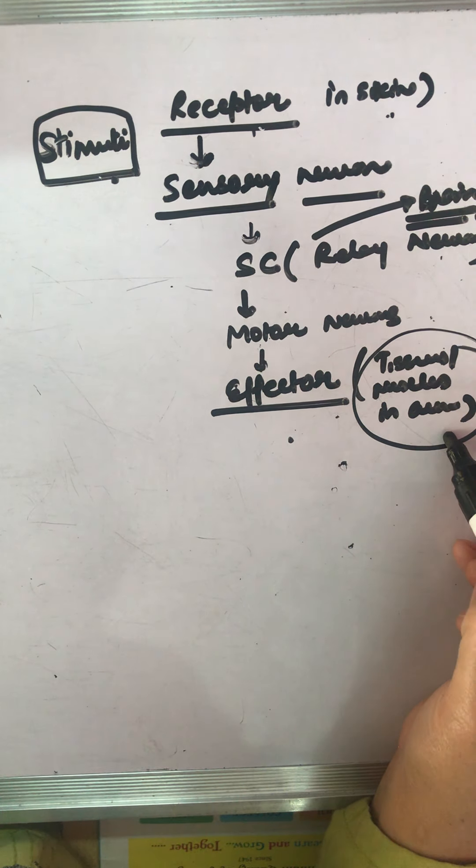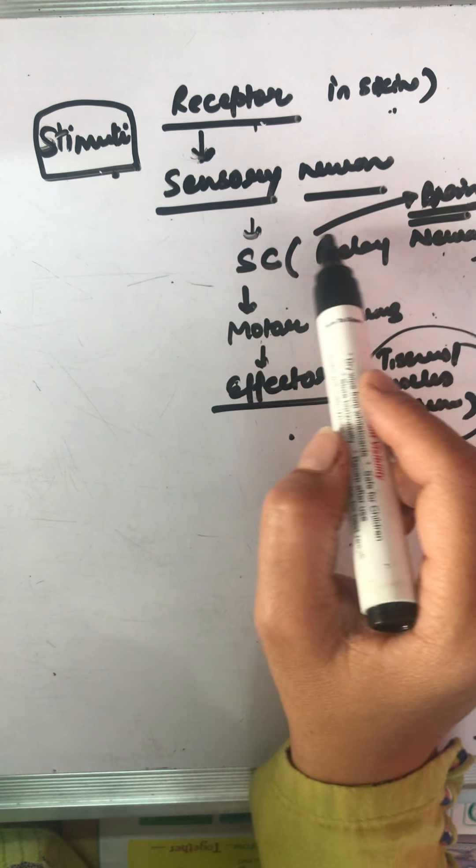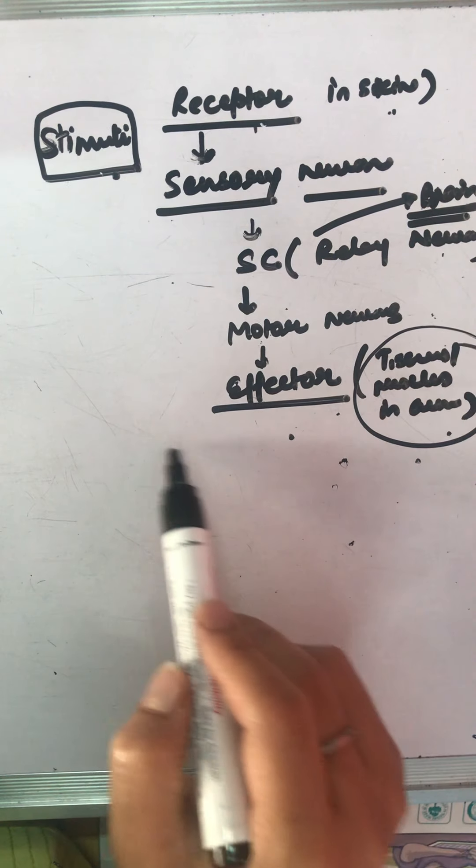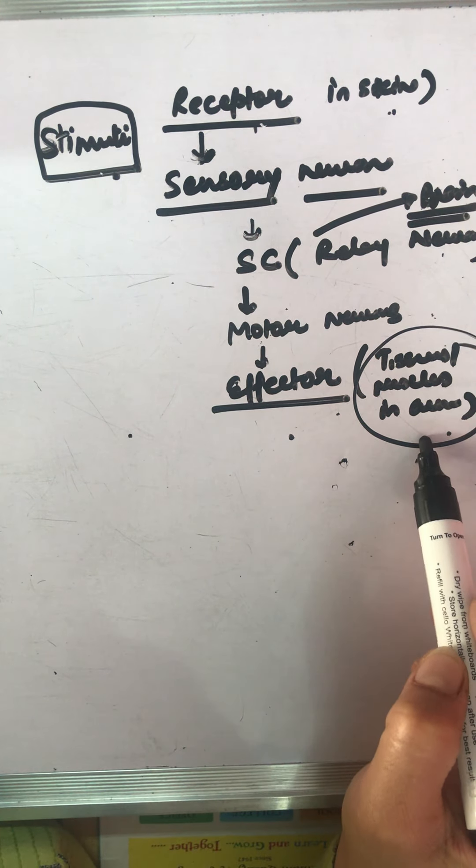The reflex action is called arc, and the path taken by the nerve impulse in the reflex action is called arc. This is an action and the path traveled by this nerve is known as reflex arc.